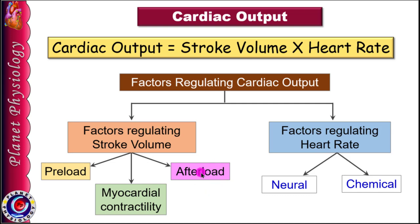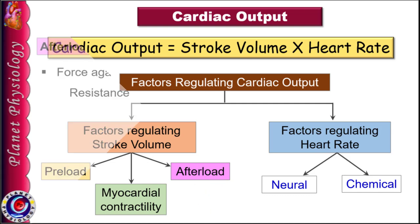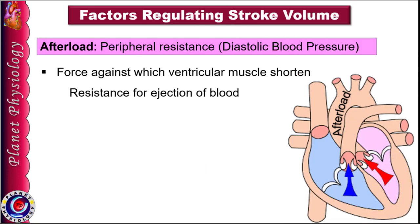The last factor regulating stroke volume is afterload — the force against which ventricular fibres shorten, or the force that resists ejection of blood from the ventricles. Peripheral resistance, which decides diastolic blood pressure, acts as afterload. Stroke volume is inversely related to afterload: more the afterload, less is the stroke volume. If peripheral resistance is higher, diastolic blood pressure is more, and the ventricles must create a stronger contraction to open the aortic valve and eject blood.